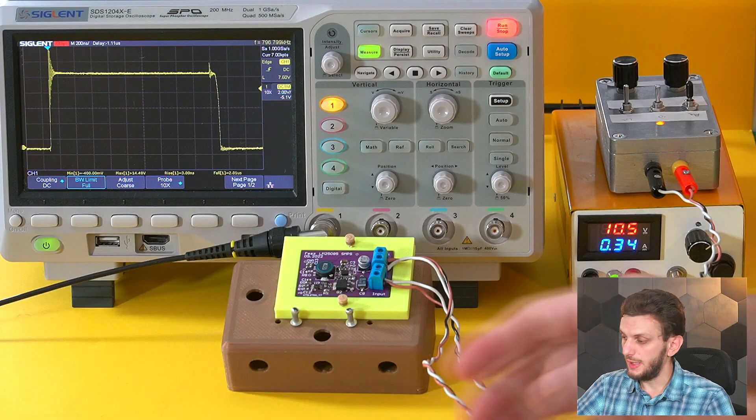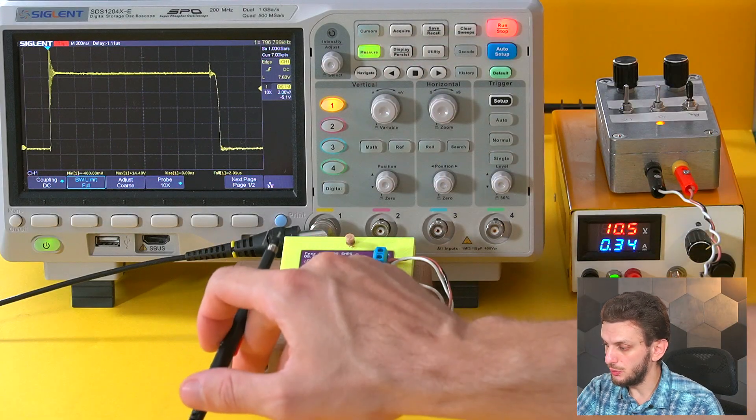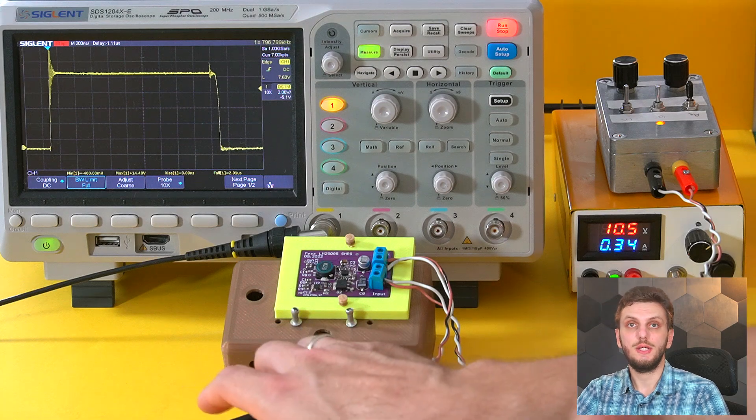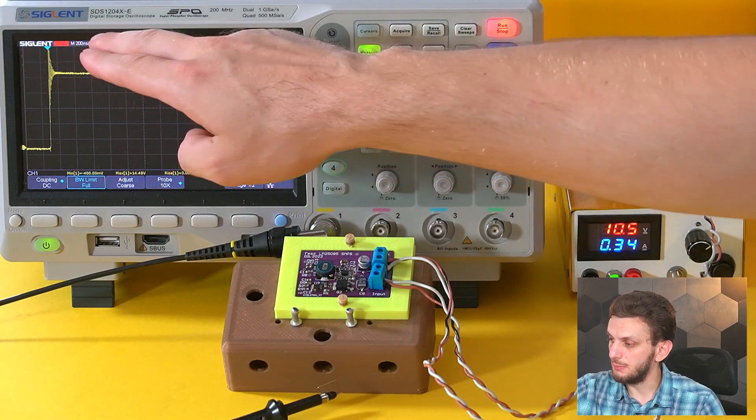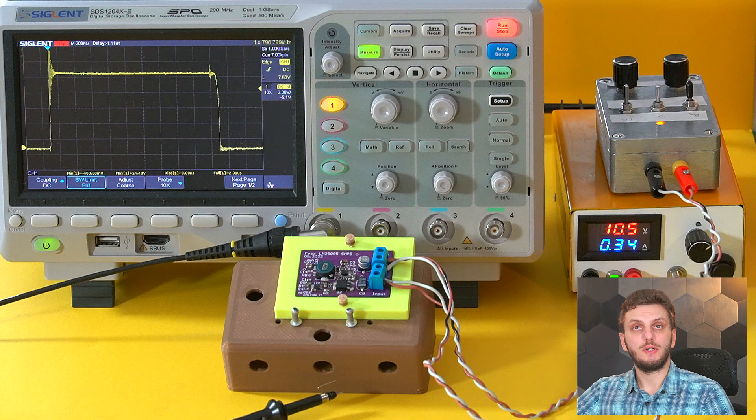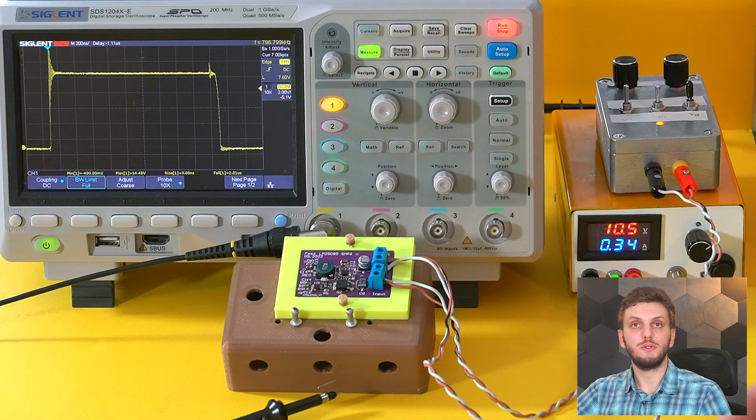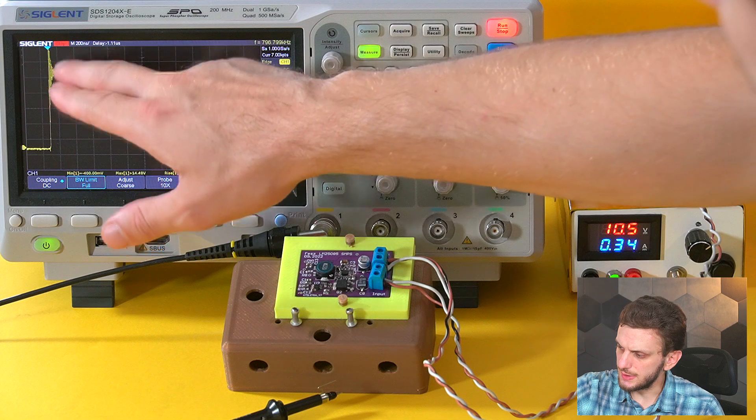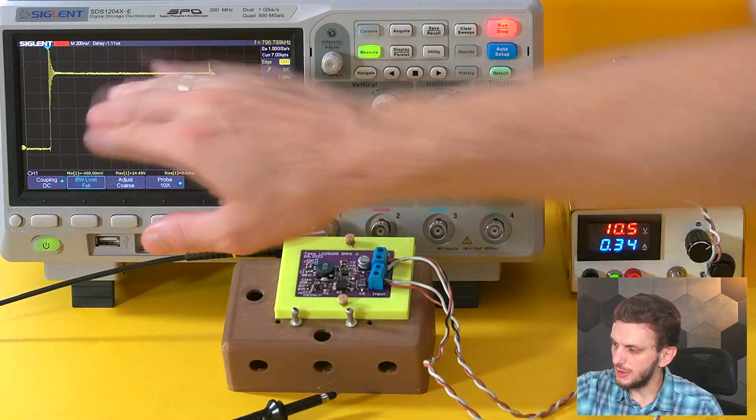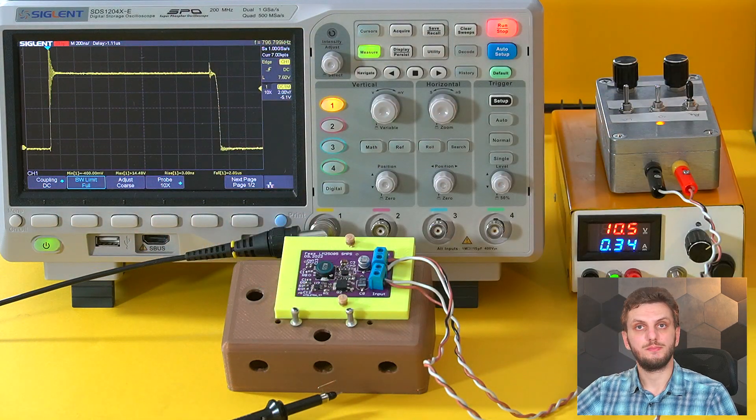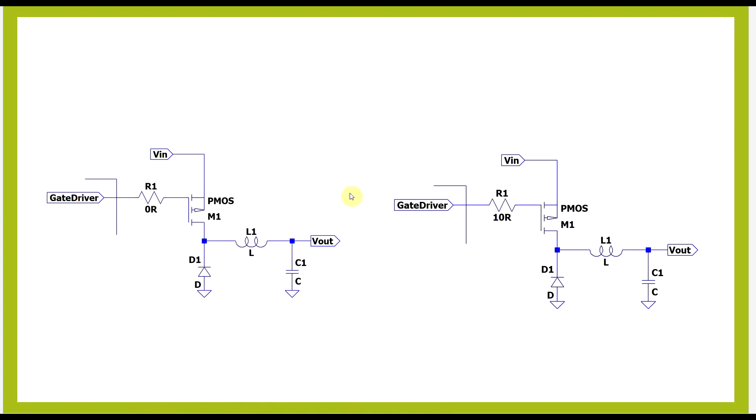For this measurement, again the oscilloscope and probe will give us the best results, since this will highlight the exact amplitude and transition time of our switching. Now, in general, the change of the gate resistor should not affect the exact ringing frequency, only the slope of the transitions. Now, to make things a bit more obvious, I already prepared the measurements.